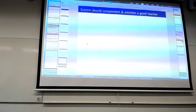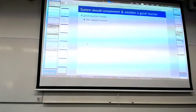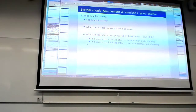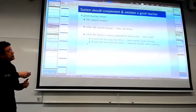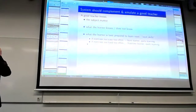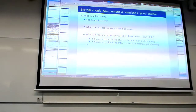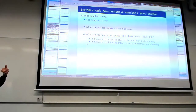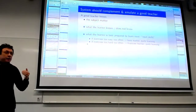The main goal of our work is that the system should complement or emulate a good teacher. A good teacher is defined as follows: he knows the subject matter; he knows what the learner knows or does not know; and given those two things, he knows what the learner is best prepared to learn next. This is what we call 'next skills.' If the exercises are too easy too often, you'll bore the learner. If they're too hard too often, you'll discourage and frustrate the learner. You have to find that exact level — that's where a lot of the work goes.